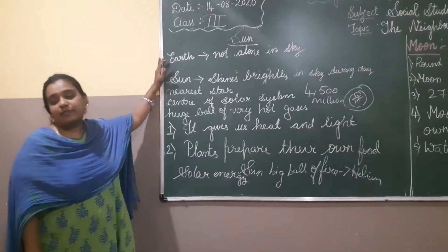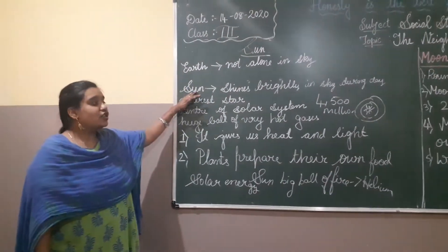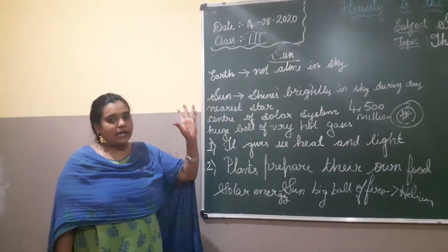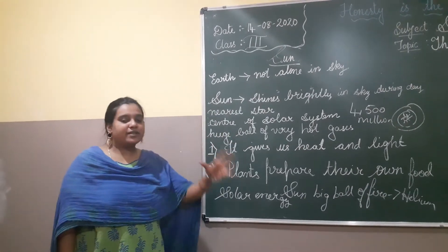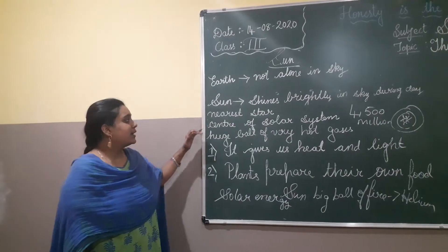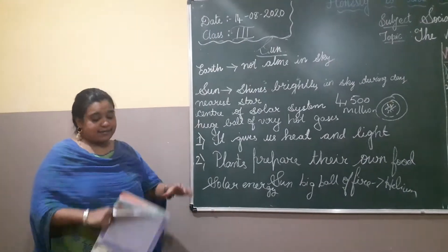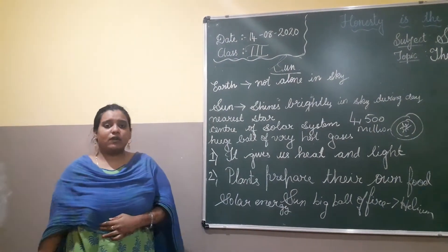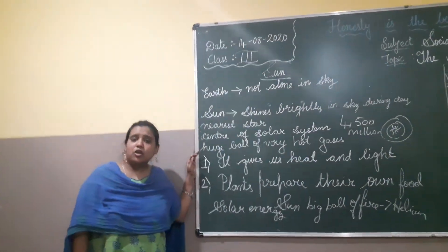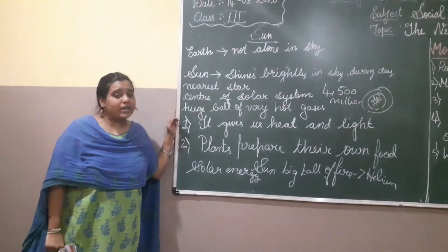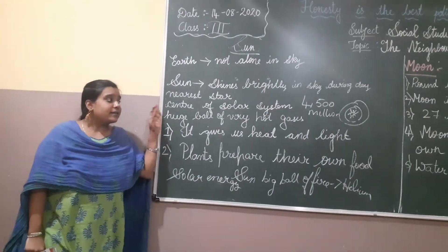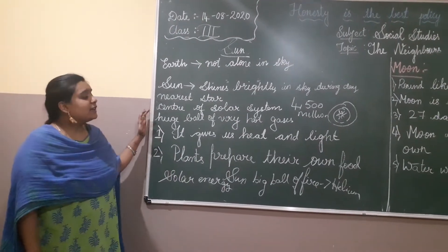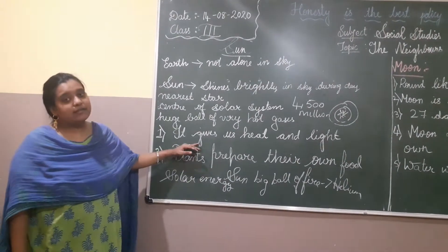Earth is not alone in the sky. The sun shines brightly by day, and when the earth rotates, the opposite side gets sunlight. The sun is the center of our solar system, and all the planets revolve around the sun. The sun is a huge ball of very hot gases, formed around 4,500 million years ago. It gives us heat and light.